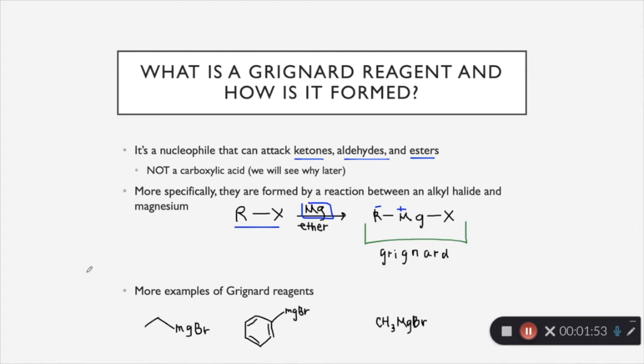Here are some examples of Grignard reagents. We have our alkyl portion, magnesium, and then in this case, the halide is bromine. Bromine is often going to be used for this. And then here's another example using a benzene, and then here's another example using a methyl group.